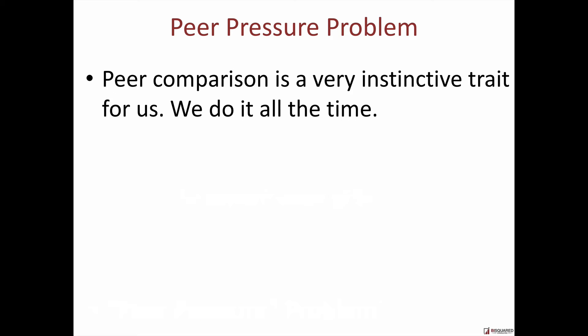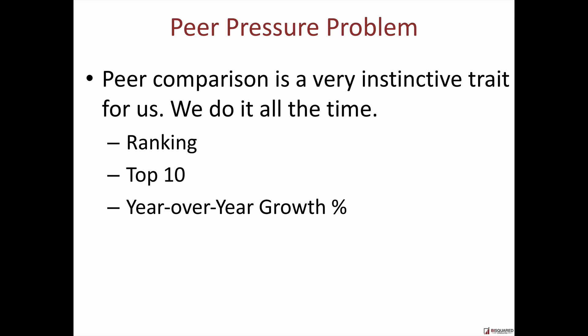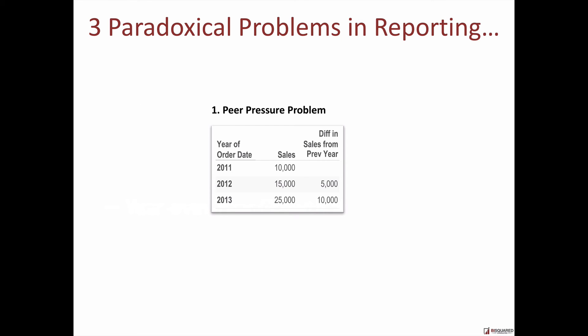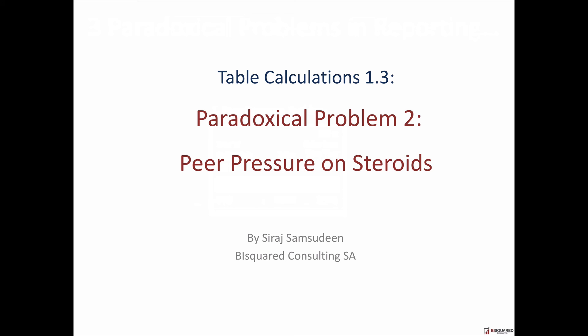Let's summarize the problem. Peer comparison is a very instinctive trait for us as human beings — we do it all the time. Look at the kind of questions we ask: even at home, when our children bring report cards, we look at their rank and relative performance vis-à-vis their peers. At workplaces, I have not met an executive who is not focused on top versus bottom analysis. We always look at reports year over year — what's the growth compared to last quarter? This is the paradox: something so needed in real-world reporting that databases are not good at. The essence is accessing a previous record and comparing it to your peer. That's the first paradoxical problem. For the next one, it's like taking the peer pressure problem and putting it on steroids.